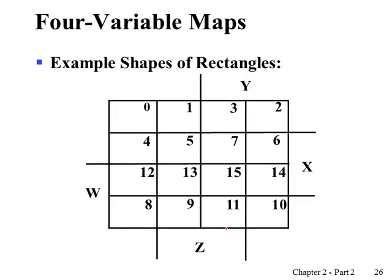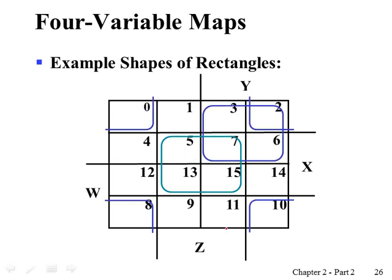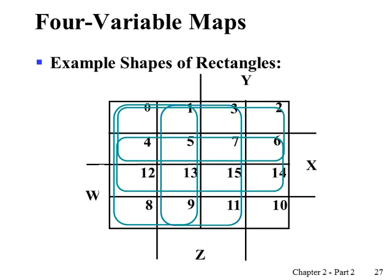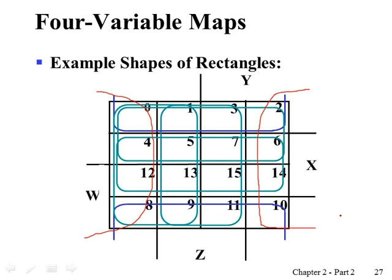In a four-variable K-map we can find several possibilities for adjacent cell groups. Here is an example of a four-cell group. Another example: the four corners are adjacent to each other, forming one single group. Here is an example of eight cells in an adjacent group. Also, the first row and the last row are adjacent, giving a group of eight. Similarly, the first column and last column form an adjacent group.